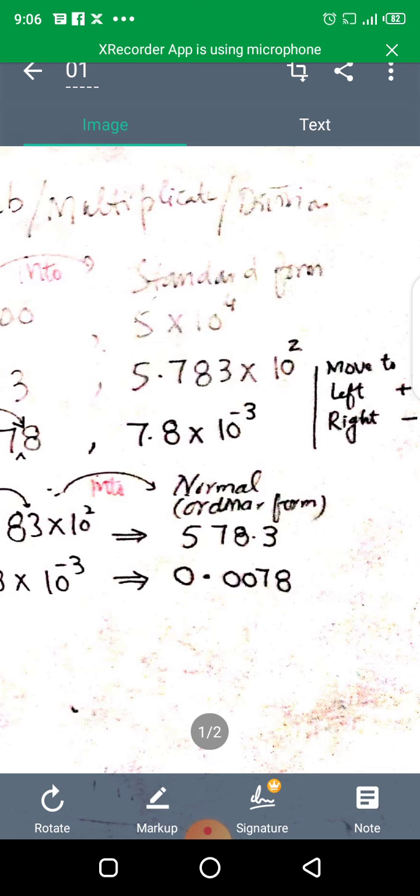Now one important example is that in standard form, if we have left move then power will be positive, and if we have right move then power will be negative.